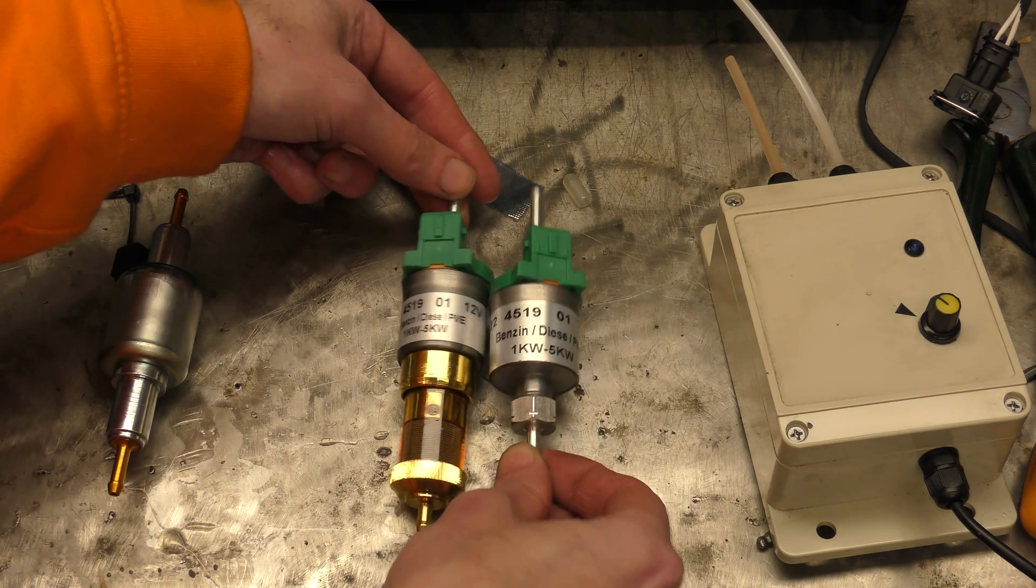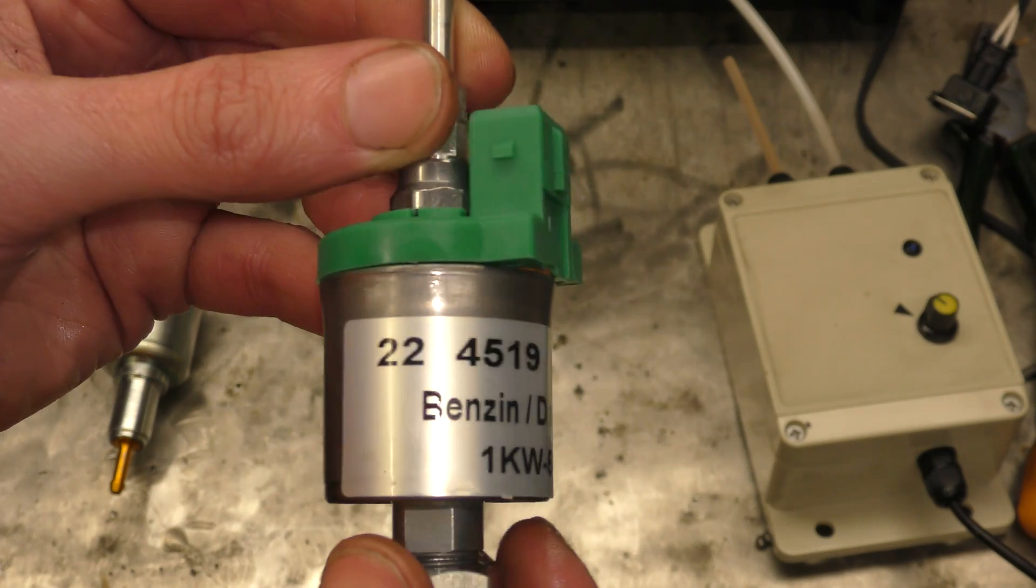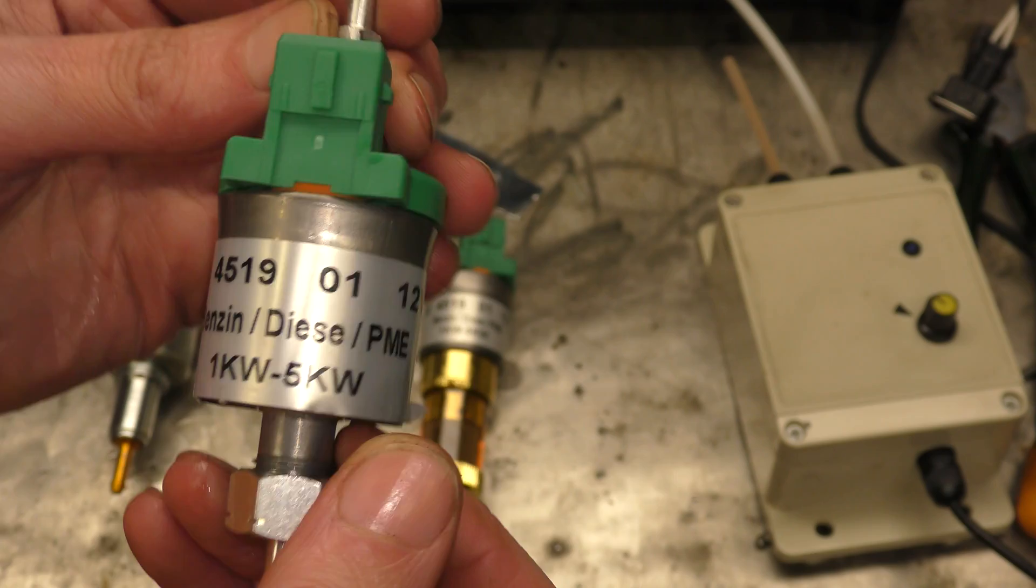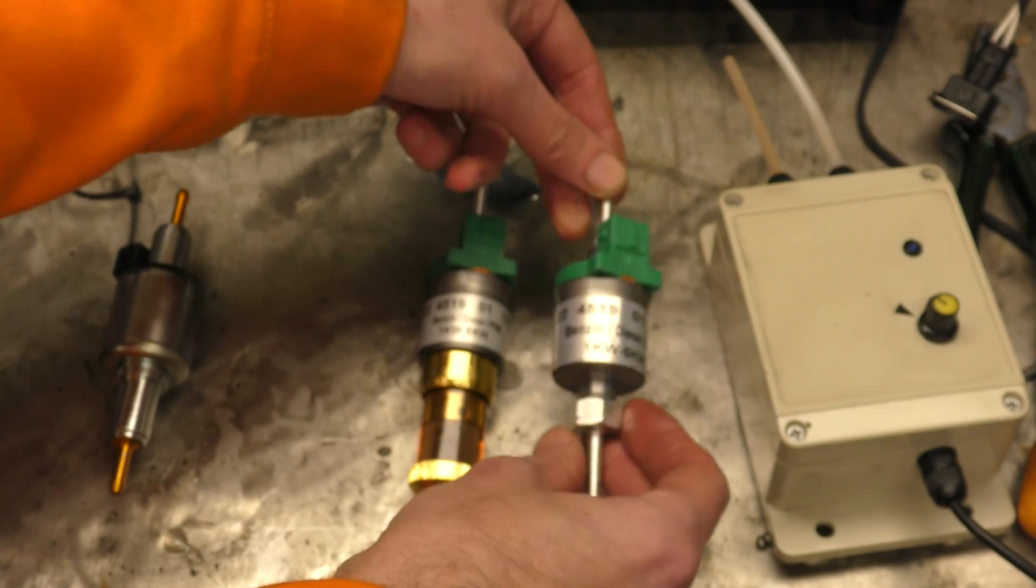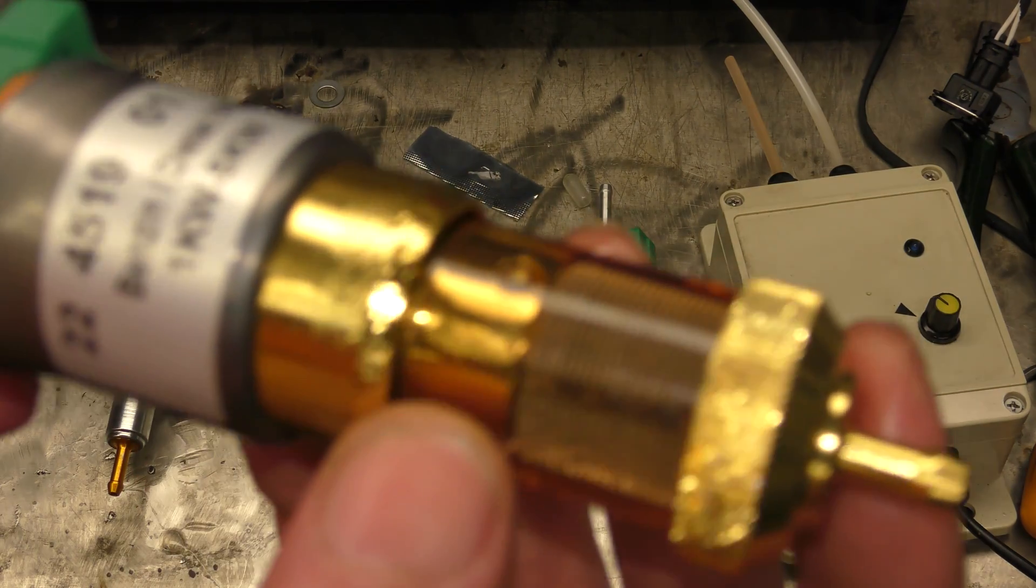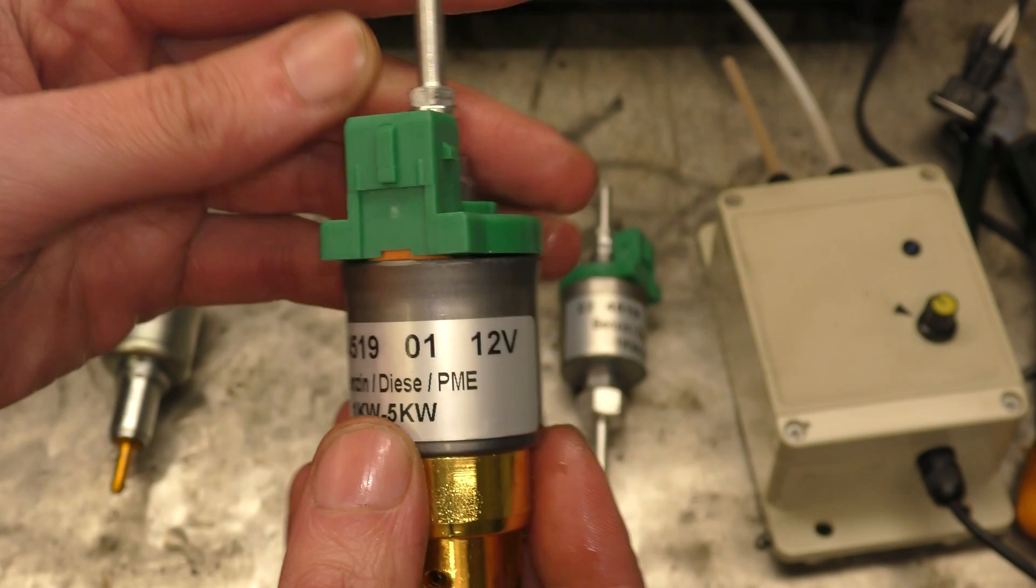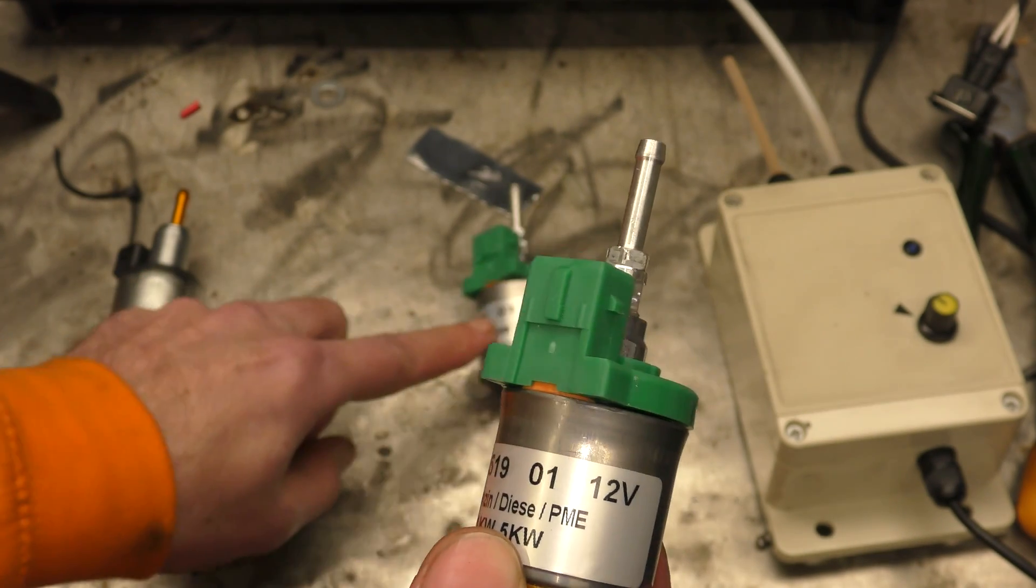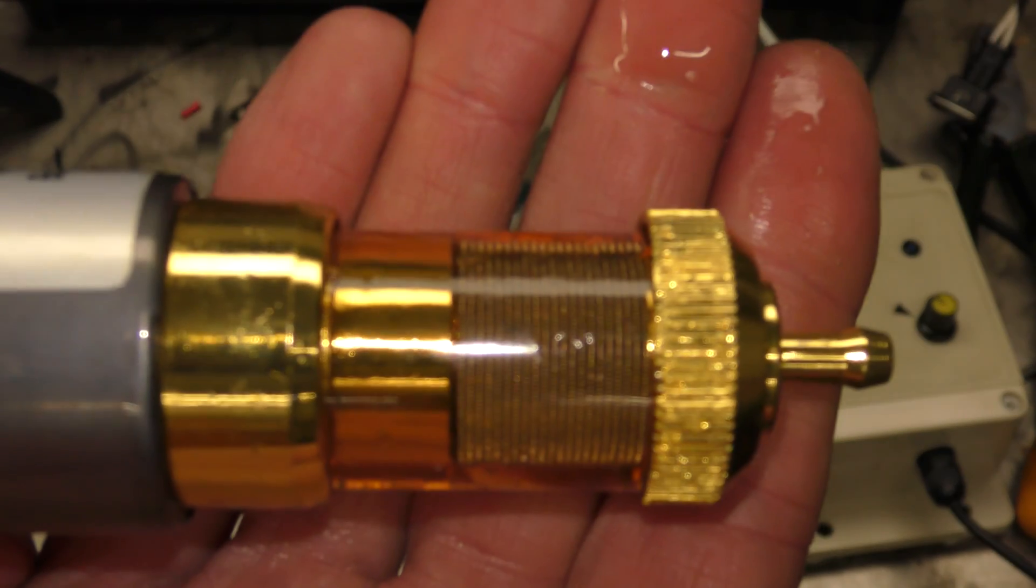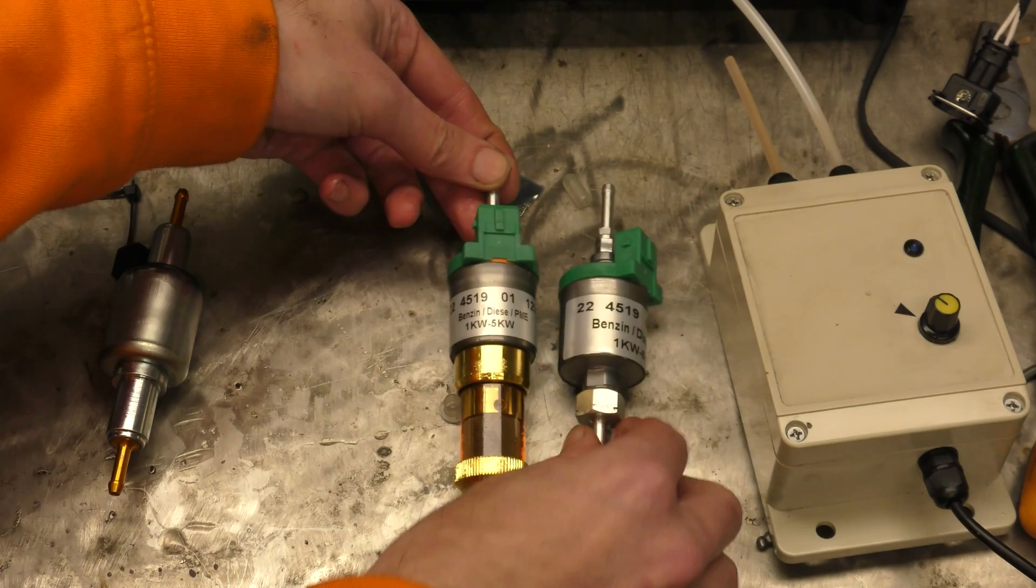So they appear to be the same except for a filter. So this is a 22 mil pump, 1 to 5 kilowatt, benzene diesel. So this one here appears to just be a very fancy brass filter end they've put on the start, on the same as the other pump there. Just the same pump but with a nice metal gauze filter inside.